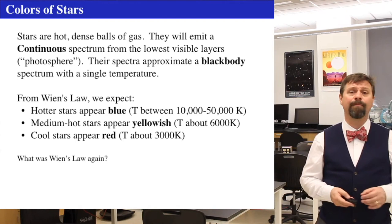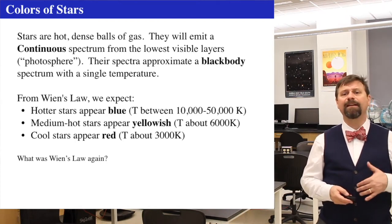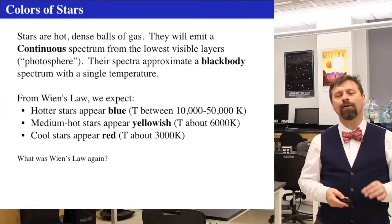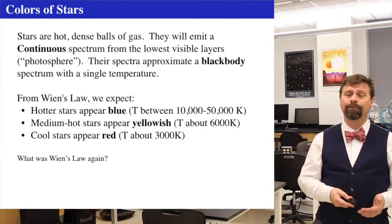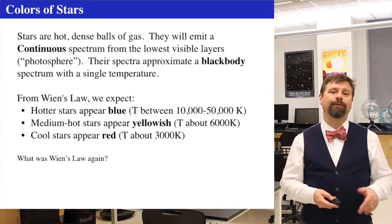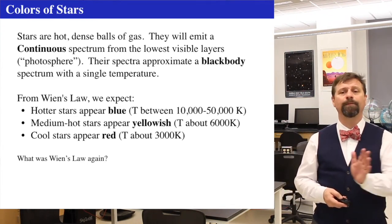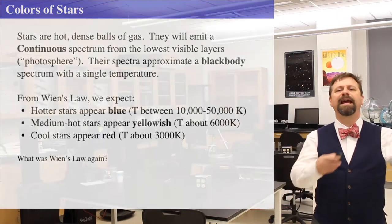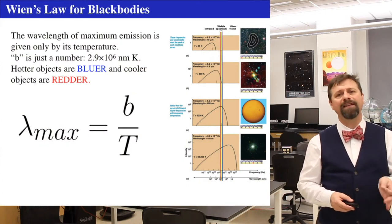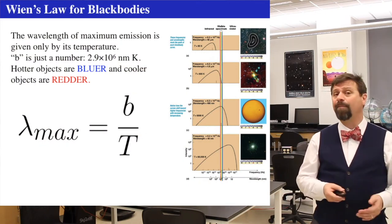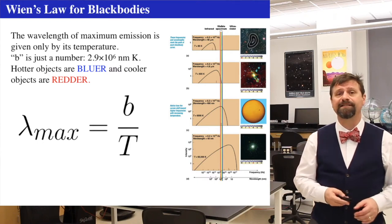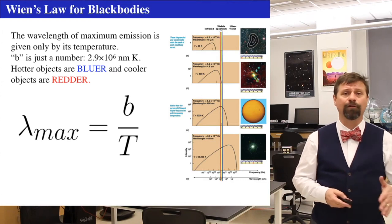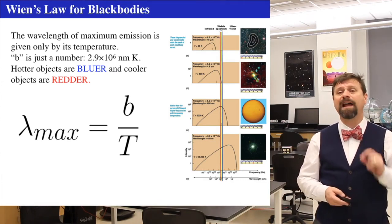If a star has a black body spectrum, then from Wien's Law — which we talked about in another video — we expect that hot stars appear blue and bright, medium hot stars will appear yellowish, and cooler stars will appear red. Wien's Law showed that the peak wavelength at which a black body radiates is inversely related to its temperature: the hotter it is, the shorter the wavelength; the cooler it is, the longer the wavelength.